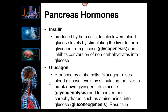Glucagon is the opposite of insulin. If a person's plasma glucose levels have bottomed out, glucagon is released to raise them back up through glycogenolysis — lysis means to break down, and glyco refers to glycogen. All cells that store glycogen break off glucose units and release them back into the bloodstream. The liver breaks down glycogen into glucose, and glucagon can also stimulate gluconeogenesis — creating new glucose by converting other substances into glucose.